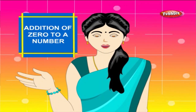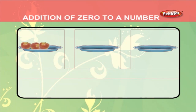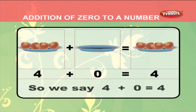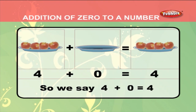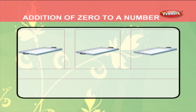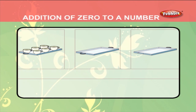Addition of 0 to a number. There are 1, 2, 3, 4 apples in the first plate and there are no apples in the second plate. We can say there are 0 apples in the second plate. 4 plus 0 is equal to 4 only. Any number added with 0 gives you the same number. In the same way, there are 1, 2, 3, 4, 5, 6 cups in tray 1 and no cups in tray 2. We say it as 6 plus 0 is equal to 6.